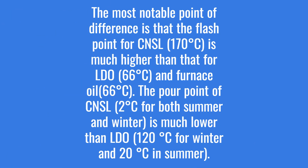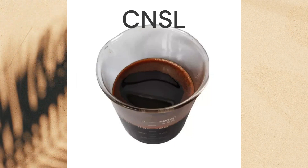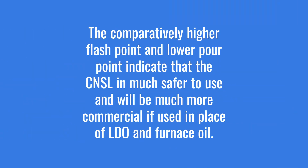A key point of difference is that the flash point for CNSL, at 170 degrees Celsius, is much higher than that for LDO and furnace oil, both at 66 degrees Celsius. The pour point of CNSL, at 2 degrees Celsius for both summer and winter, is much lower than LDO at 120 degrees Celsius in summer. The comparatively higher flash point and lower pour point indicate that CNSL is much safer to use and will be much more commercially viable if used in place of LDO and furnace oil.